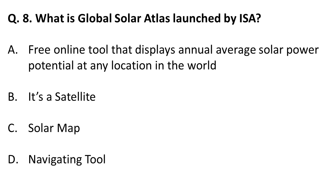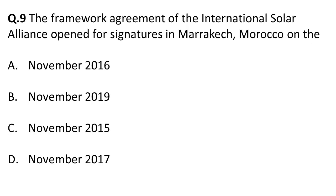What is the Global Solar Atlas launched by the International Solar Alliance? The Global Solar Atlas is a free online tool that displays the annual average solar power potential at any location in the world. By knowing the solar power potential at a given location, people can decide whether a solar panel or solar plant can be installed there.